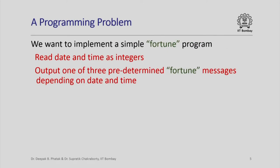Here is a simple programming problem. Several of you may be aware of the Fortune program available in Unix and Linux based systems. Every time you run this program it prints one of several predetermined anecdotes or messages. We want to implement a simple version that reads the date and time as integers from the user and then, depending on the date and time, outputs one of only three predetermined fortune messages.